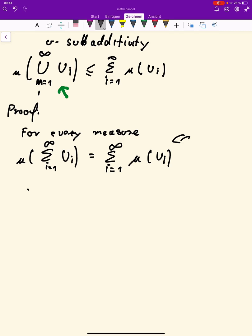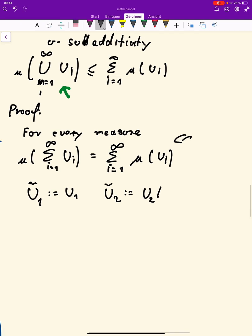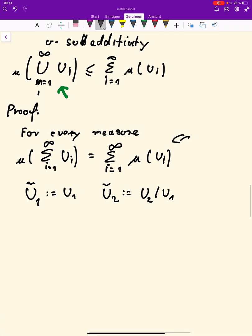we define non-overlapping sets. So let me think about how we should call them. Let's call them u-snake, u-wiggly line. So u1, wiggly line is, well, it's just u1, and u2 is, u2, wiggly line is u2 without u1. So remember, u2 and u1 might have a non-empty overlap. And we take this overlap out and define u2, wiggly line, just to be what you get when you look at u2 and you take every point out that is also in u1.